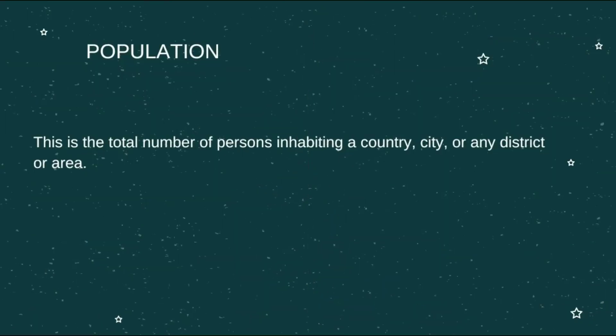If we're going to talk about population, settlement and distribution, it is first important that we describe what a population is. Simply put, a population is the total number of persons inhabiting a country, a city, or any district or area. It's the amount of persons located in any area — a country, in the world, in your community, in your scheme, in your household. It's all population.